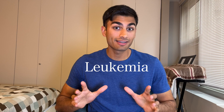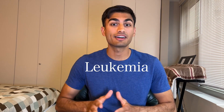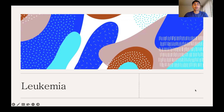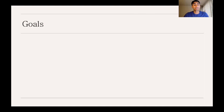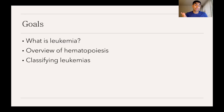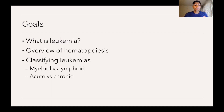Today we're going to be talking about leukemia, specifically how the different types of leukemia are classified. Let's go over the goals of today's lesson. We're going to talk about what leukemia is, go over an overview of hematopoiesis — how blood cells develop from a common precursor — how we classify leukemias into myeloid versus lymphoid types and acute versus chronic types, and lastly some special types of leukemias.